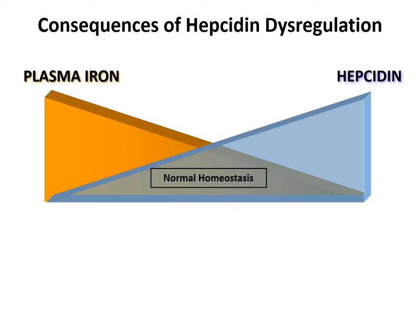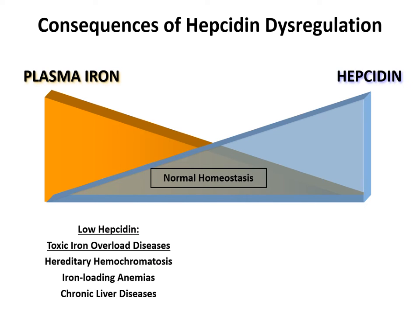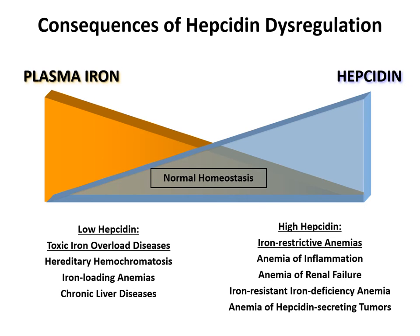However, when hepcidin regulation is disrupted, iron-related diseases occur. Inappropriately low hepcidin levels lead to toxic iron overload, including diseases such as hereditary hemochromatosis, iron-loading anemias, and chronic liver disease. On the other side, when hepcidin is inappropriately high, iron-restrictive anemias develop, including anemia of inflammation, anemia of renal failure, IRIDA, and anemia of hepcidin-secreting tumors.